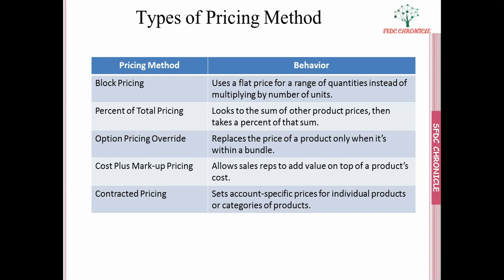What do we mean by block pricing? Block pricing is a static pricing — it does not depend upon quantity or anything else. For example, if 1 to 5 persons want to subscribe to an OTT channel, I give them a flat price of $50. If it goes beyond 6 to 10, then I give it at $70 — a flat price per range.